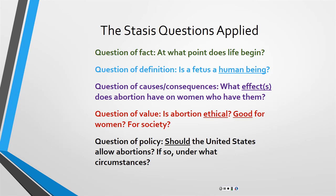My whole reason for teaching you this is to help you figure out what it is we're actually arguing about — to argue one thing at a time instead of seven, and to see if, when we slow down, there might be some common ground even if we disagree at the stasis of policy. We're going to come back after spring break and talk about the triangle of claims, which is stasis theory, evidence, and reasoning. Thank you all — see you in two weeks.